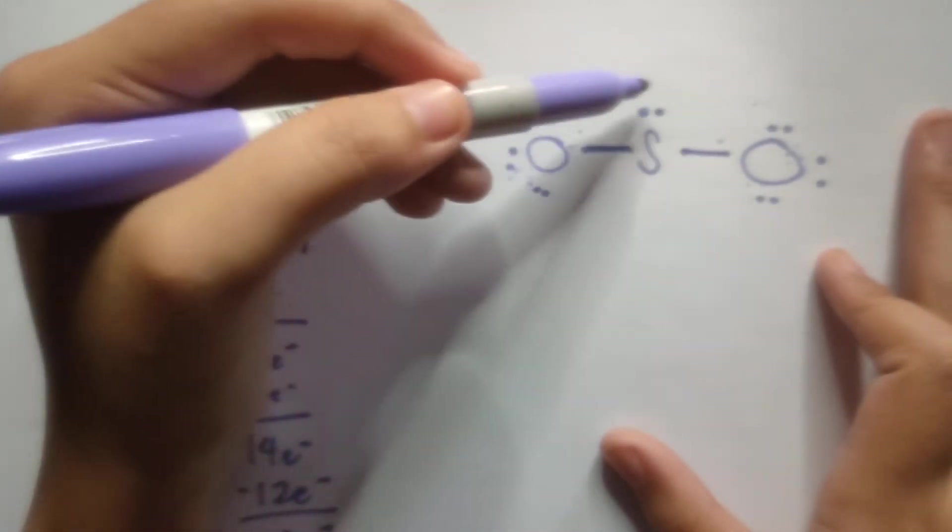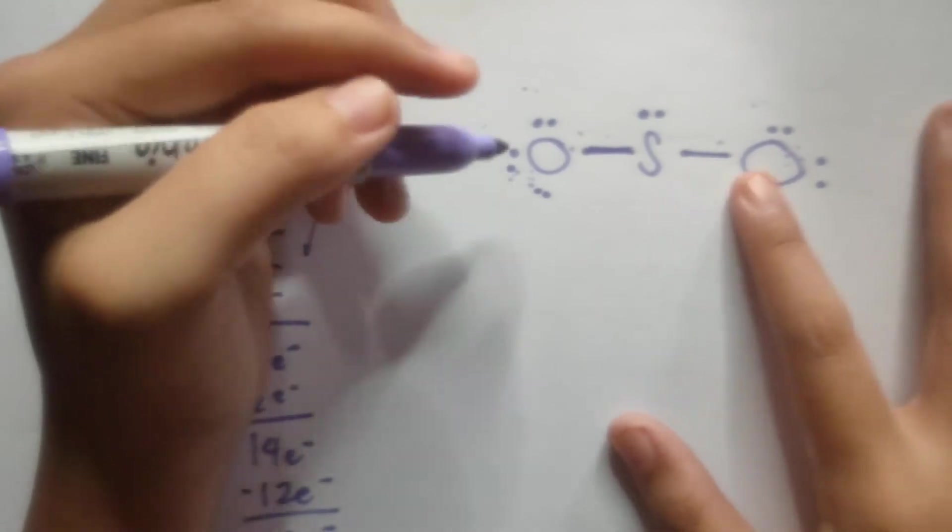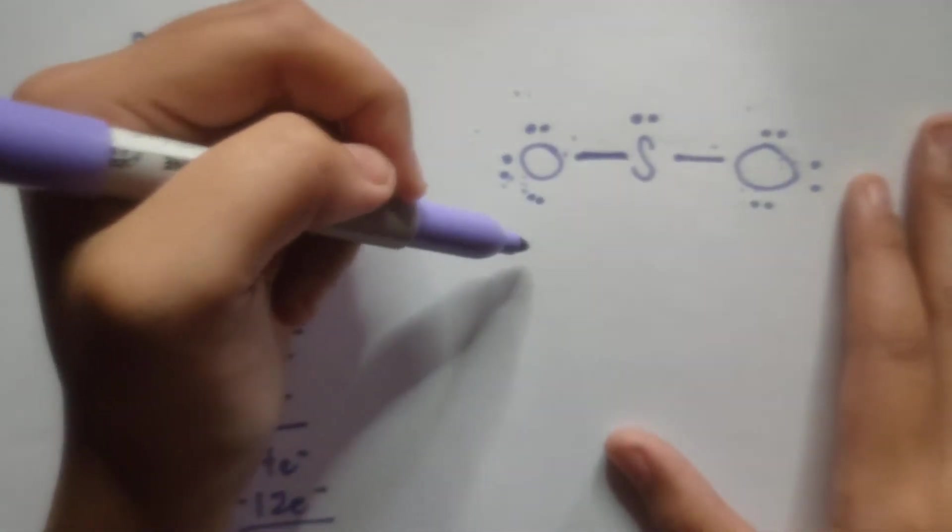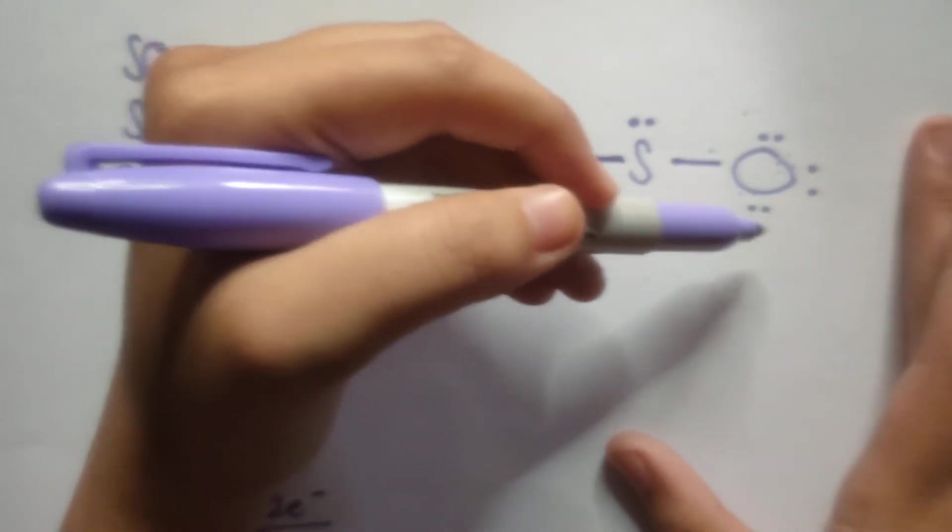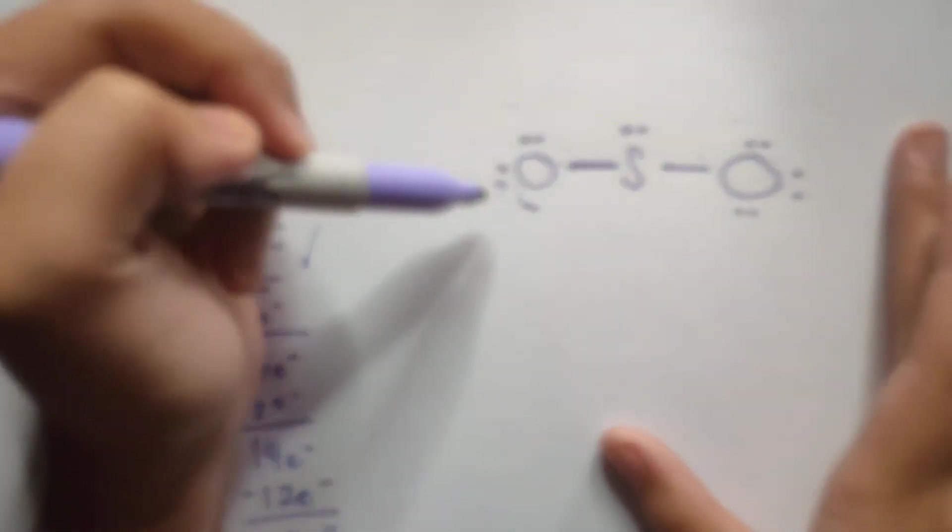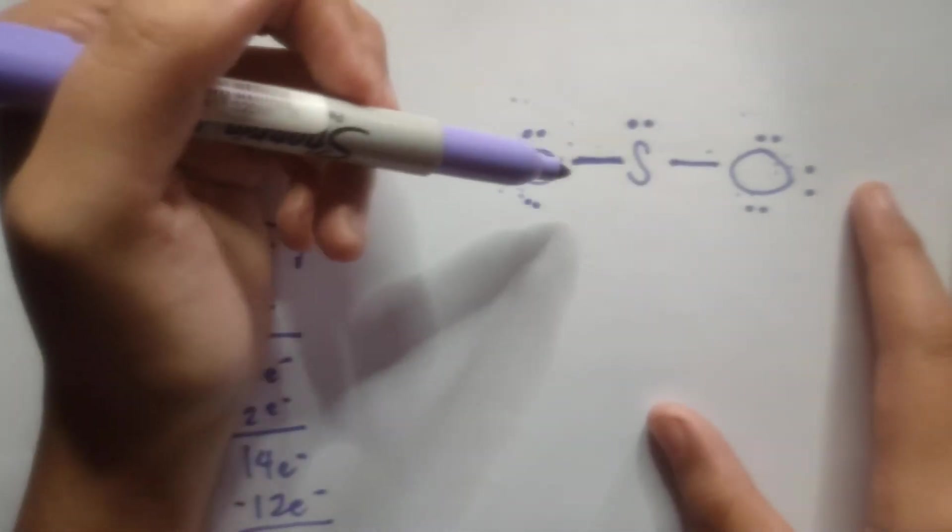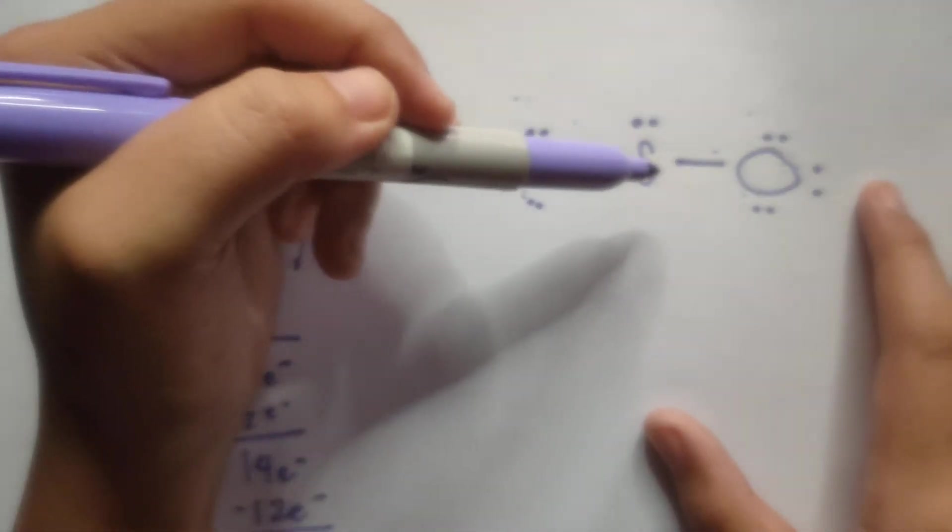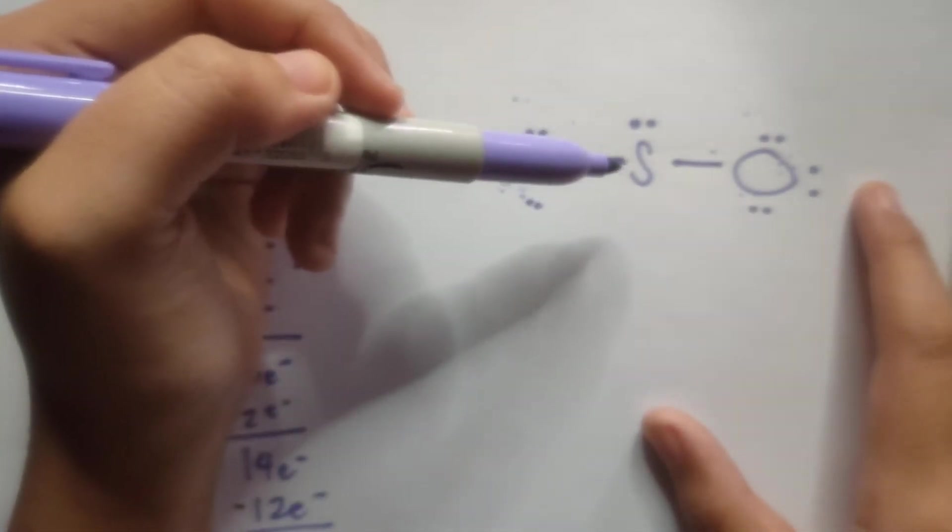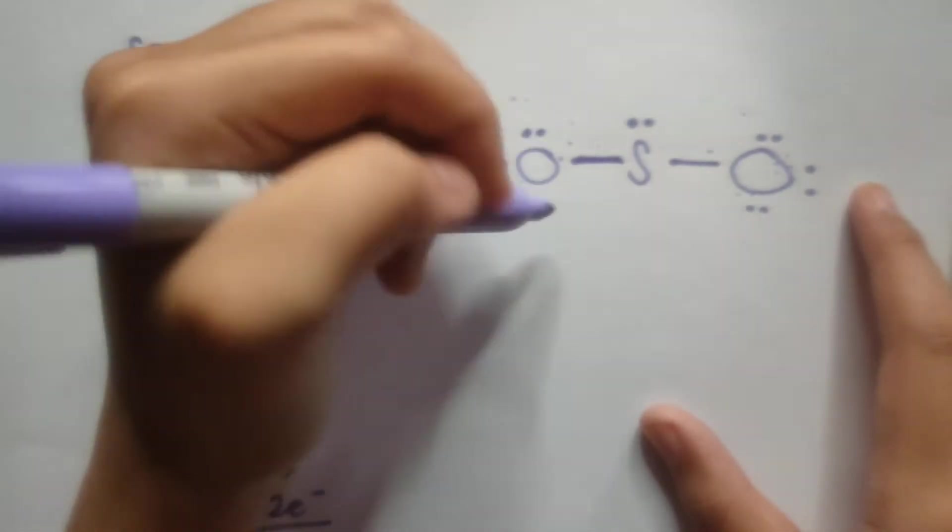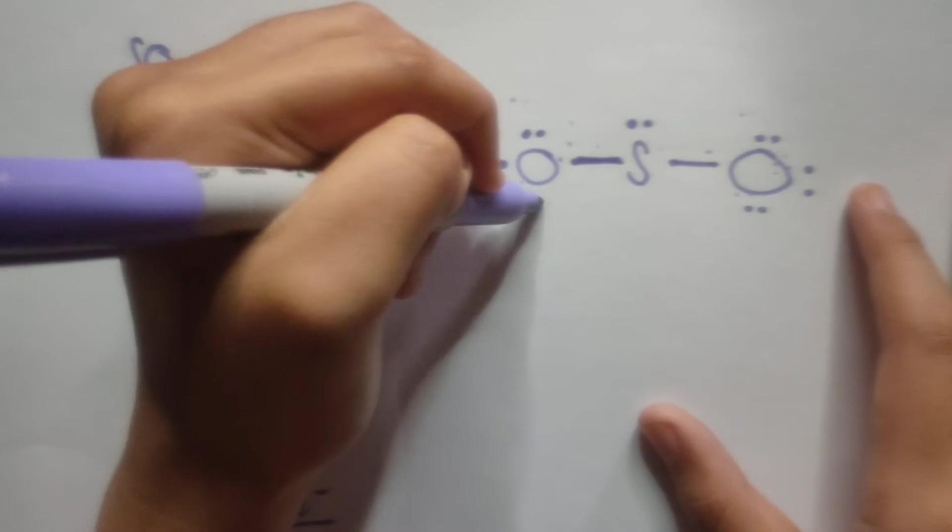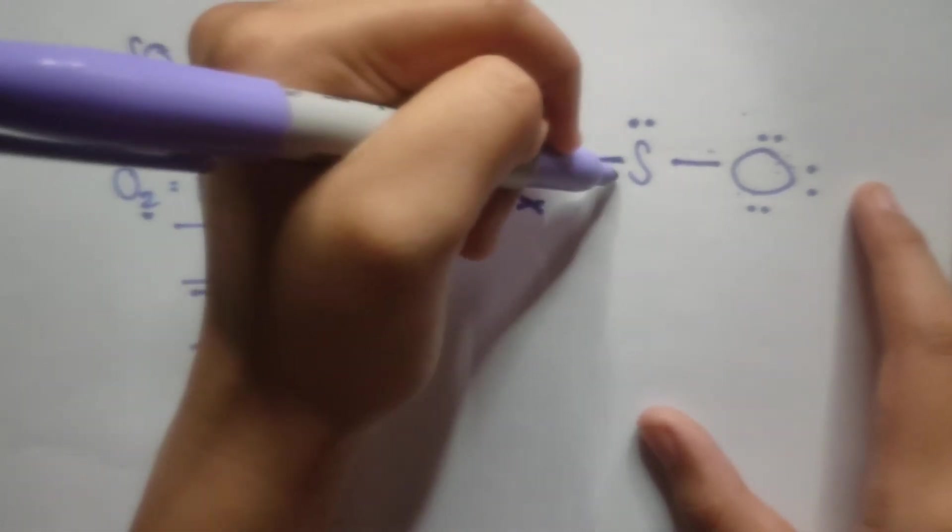Sulfur only has 1, 2, 3, 4, 5, 6 electrons. So what do we do? This is the part where you have to rearrange. You can rearrange the extra pairs, the lone pairs in the adjacent atoms, such that you can turn them into bonds. Well, think of it this way, we can turn this lone pair into a bond.